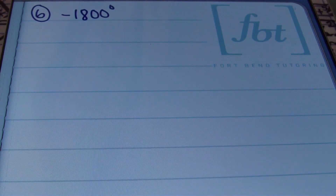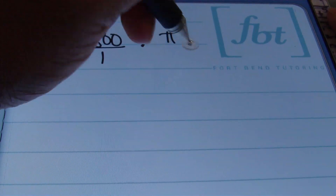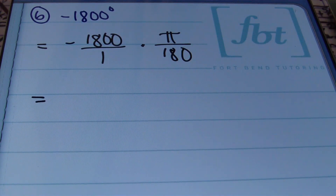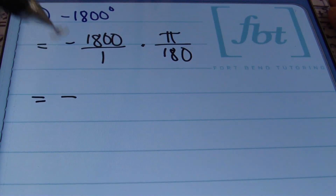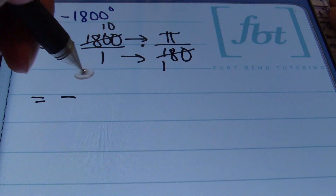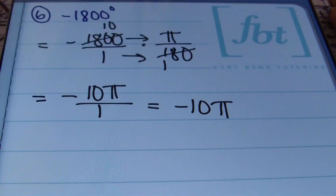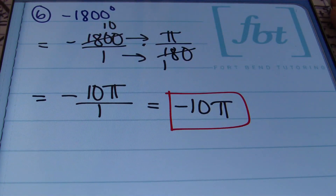Problem number 6: we have negative 1,800 degrees. Once again, if you start out with a negative value, your answer must be negative. Converting this into radians: negative 1,800 over 1 times π over 180. Simplifying before multiplying: 180 goes into itself once and goes into 1,800 ten times. Multiplying straight across: 10 times π gives 10π, and 1 times 1 is 1. This simplifies to negative 10π. That is the answer to problem number 6.